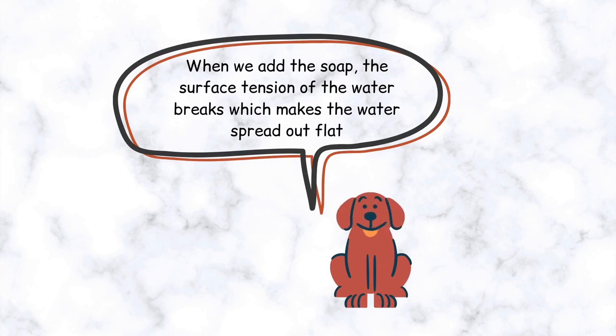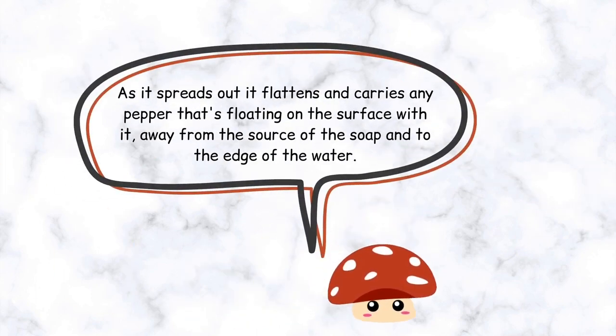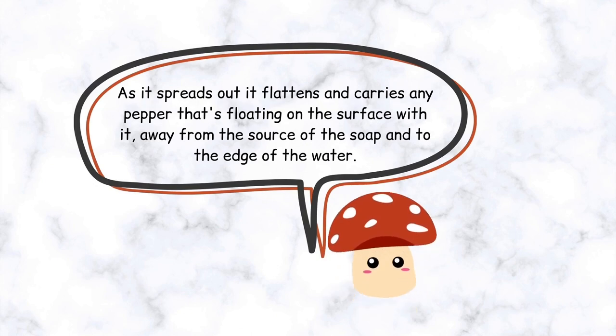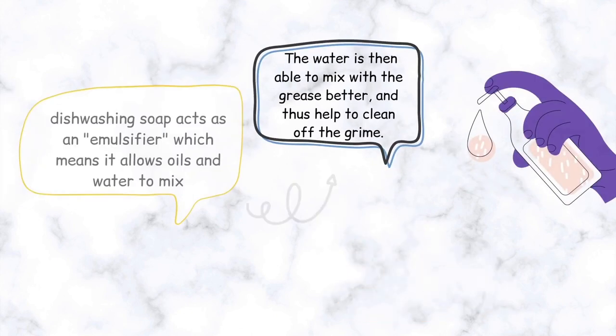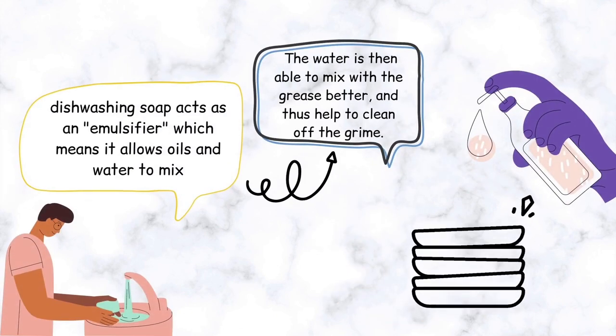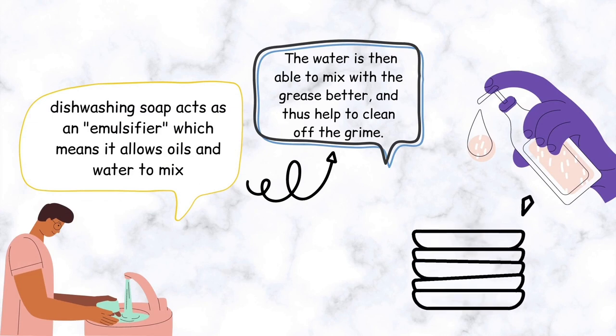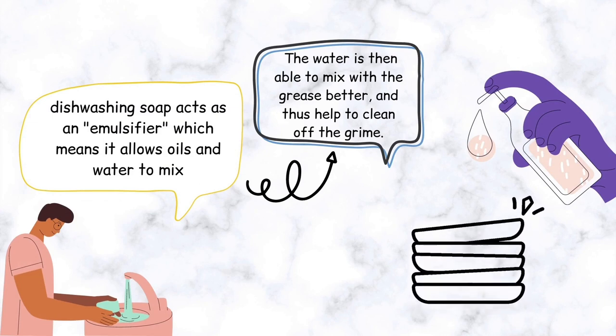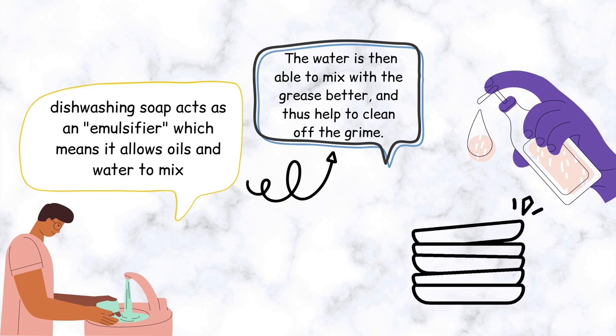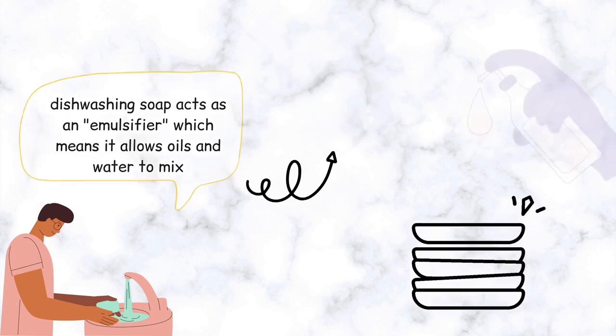Adding the soap causes the surface tension of the water to break. This makes the water spread out and flatten, and while this happens, the water takes the black pepper away from the source of the soap. Dishwashing soap acts as an emulsifier which means it allows oils and water to mix. The water is then able to mix with the grease on the dishes better and thus helps to clean the grime.